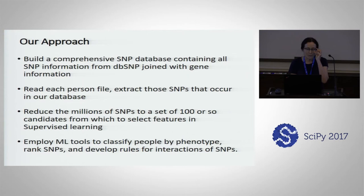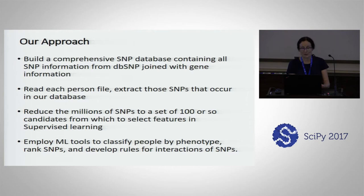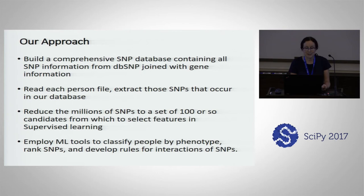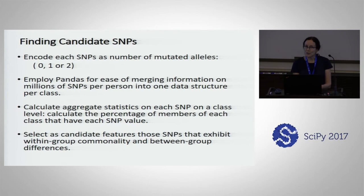The approach here is: first, build a comprehensive SNP database containing all the SNP information from dbSNP joined with the gene information. Read each person's file, extract those SNPs that we're tracking because they occur in our database, and reduce the millions of SNPs to a set of 100 or so candidates. These candidates are the ones we pass on to supervised learning. We encode SNPs as the number of mutated alleles.